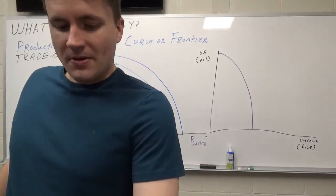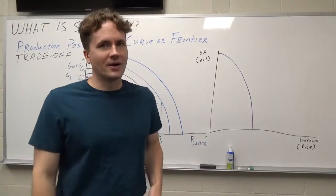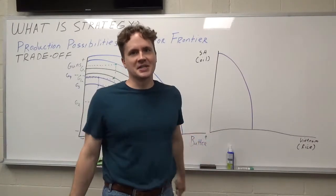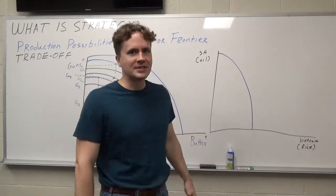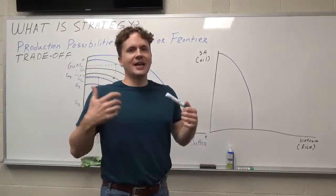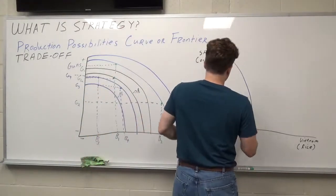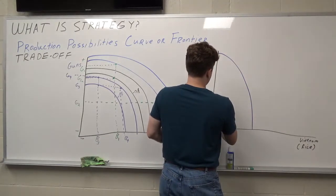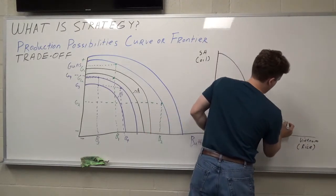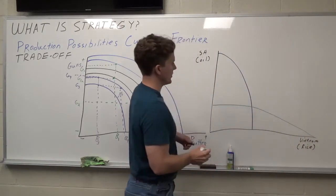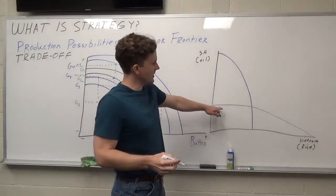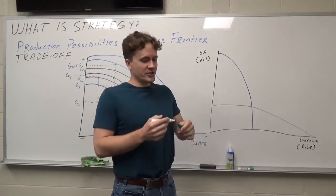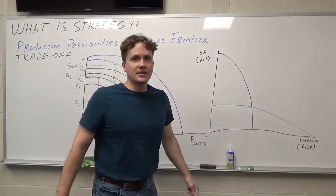Then you've got a country like Vietnam where there might be a little bit of offshore oil, or there might be a little oil in country somewhere, but it's really expensive to produce and you've got to drill really deeply. So to take the resources to develop oil rigs, it looks something like this. What I'm trying to show here is that they've got to get rid of a lot of rice or give up a lot of rice to produce just a little bit of oil. And that's what we see here.